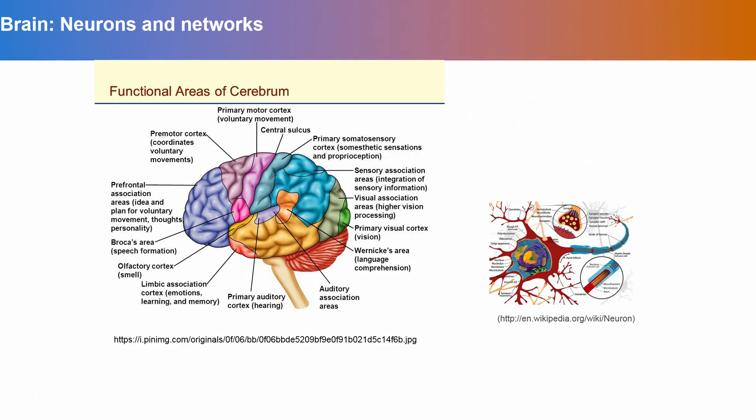Let us get started with a brief introduction of how the brain works and how we can draw inspiration from the brain towards designing neural networks. The brain is a complicated organ, and one of the important regions is the cerebrum, which has a lot of interesting functional areas that lead from voluntary movement to memory and functioning.